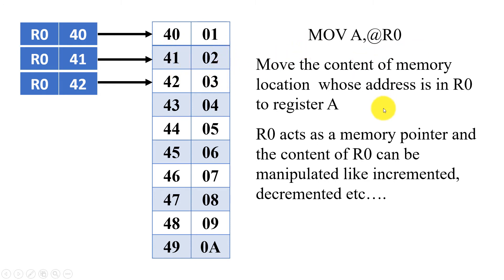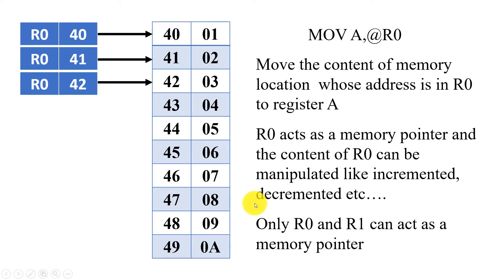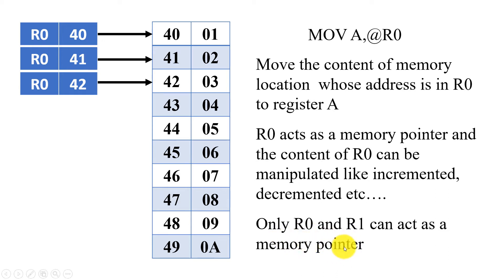For the 8051, there are only two registers — R0 and R1 — that can be used as memory pointers. No other R registers can be used as memory pointers. This is an important point related to the 8051.